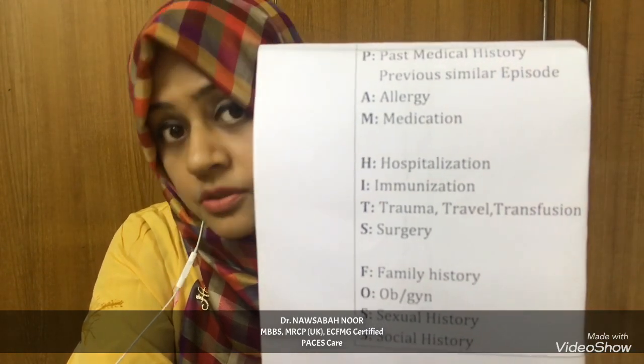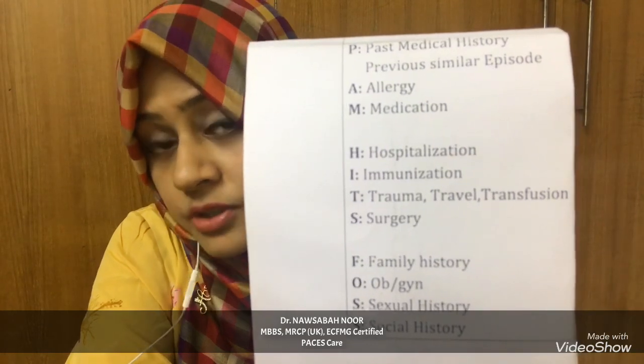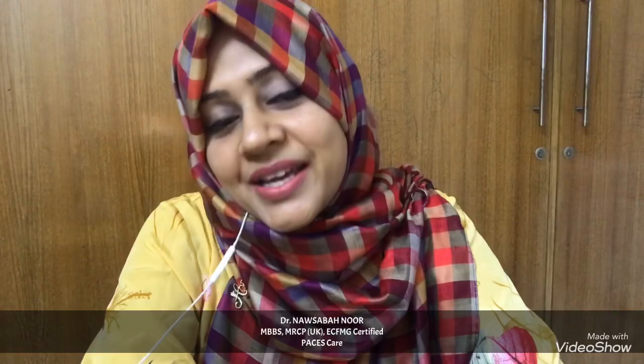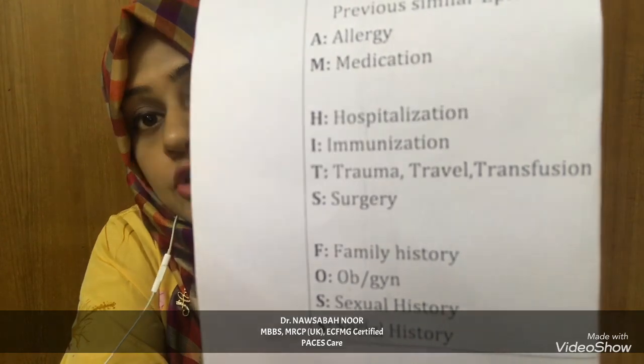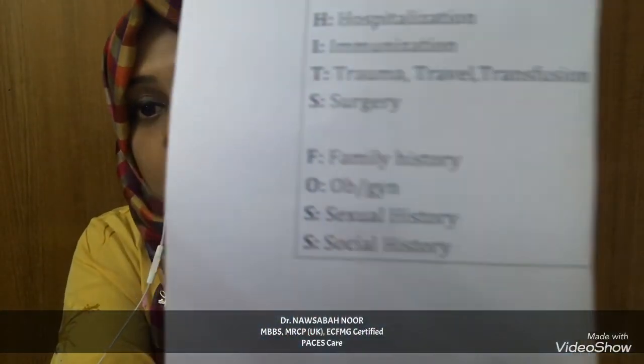The other P is for any previous similar episode. A for allergy to any medication or food. M for medication — we take all details of current medications, whether the patient is adherent, any side effects experienced, and most importantly any recent changes in medication. Then HITS: H for hospitalization, I for immunization, T for trauma, travel, and transfusion, and S for surgery.